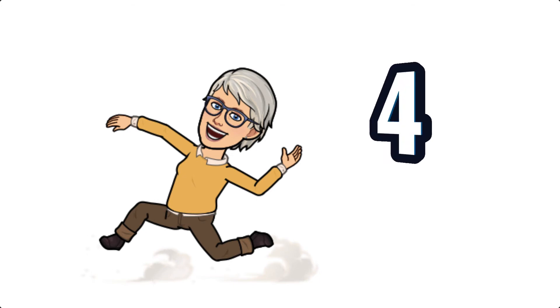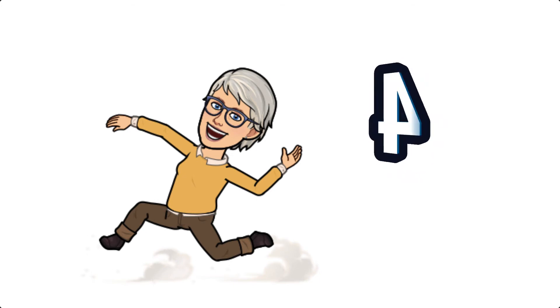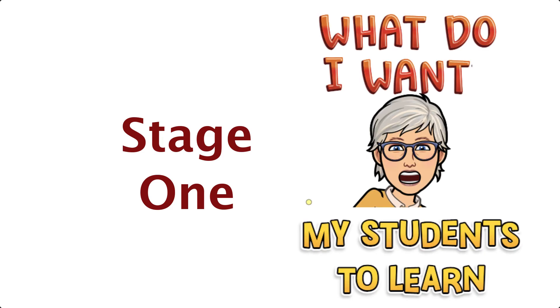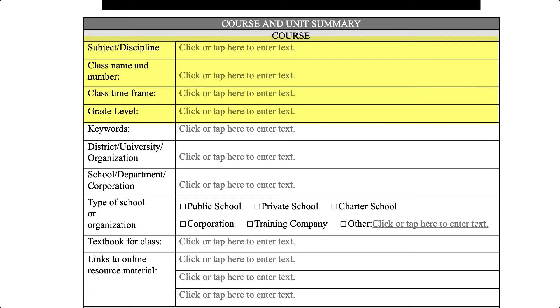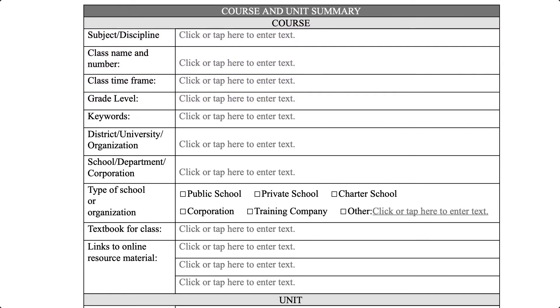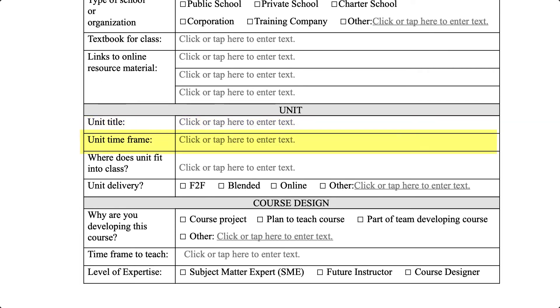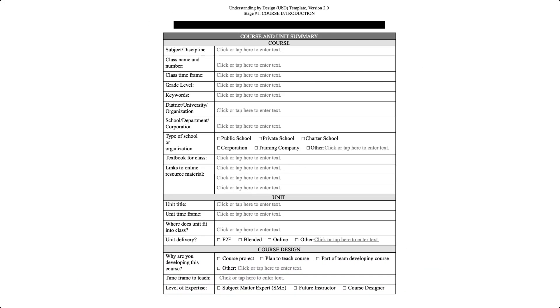I'm going to divide the template into four different sections to make it a little easier. We'll start with stage one and look at identifying our desired results. In this section, you can see it's divided into course, unit, and course design. We're really just laying out the framework or background for where this unit fits into the overall curriculum for students — what program, what course, what content we're covering. We want to identify the specific unit, about how long it's going to take, where in the instruction it occurs, and why we are developing it — to have some intent and purpose when we design our instruction.